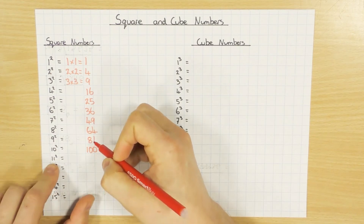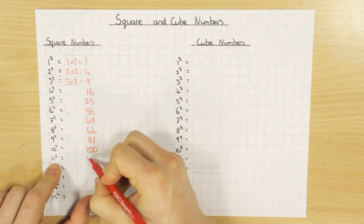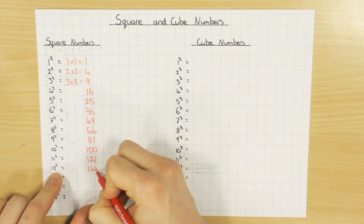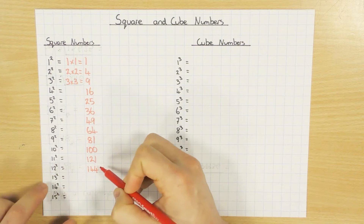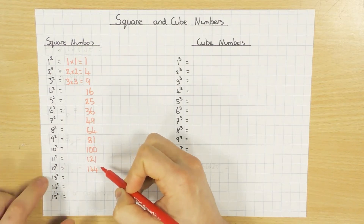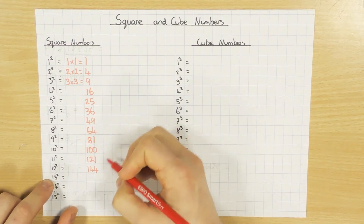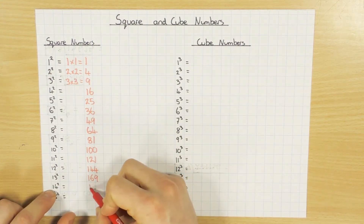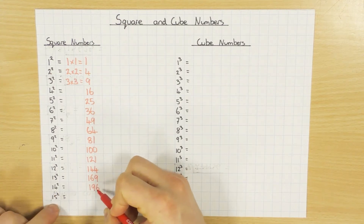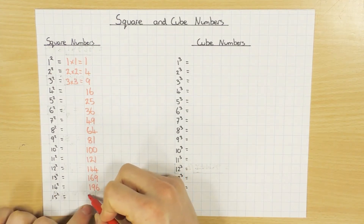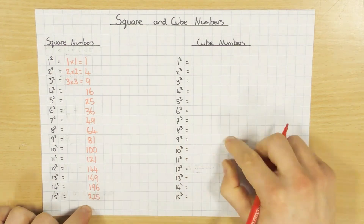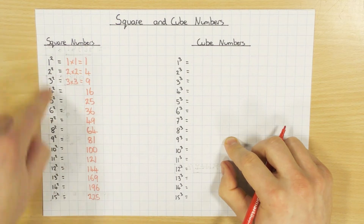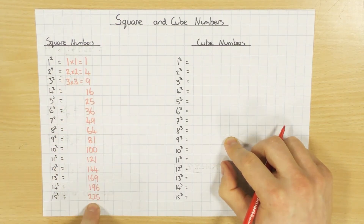OK, and these ones here, people tend to forget. But 11 times 11 is 121. 12 times 12, 144. Those two are not too bad, but people definitely forget these ones here, which again are handy and you should know. So 13 squared is 169. 14 squared, 196. And 15 squared, so 15 times 15, 225. Now, all of these are the square numbers — these are the ones that you need to remember.